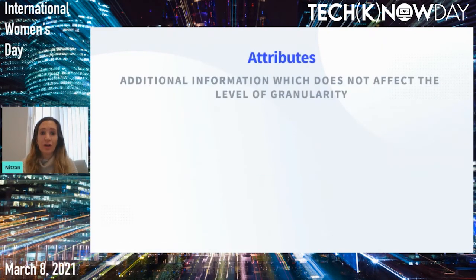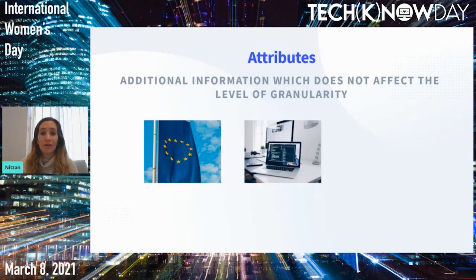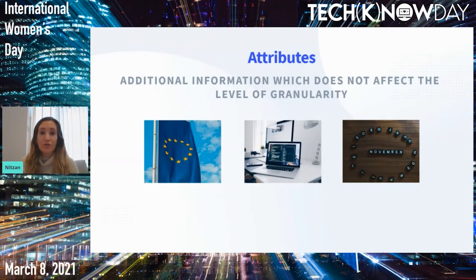Besides the dimensions, we also have attributes. Attributes are additional information which does not affect the level of granularity — for example, mapping a name to an ID, or something at a higher level of granularity. In our case, if we want to understand engagement by region, that's easy because we already have country as a dimension. All we need to do is map the region to the country and add region as an attribute. Similarly, to understand if desktop users are more engaged than mobile users, we'll map device type to OS and add it as an additional attribute. Since we also need monthly data, we'll add month as an attribute and create a date hierarchy containing date, month, quarter, and year.